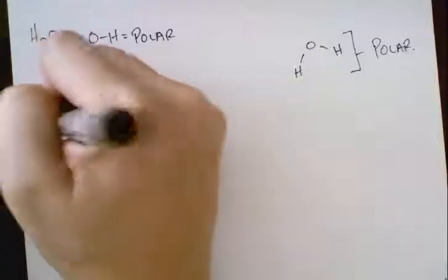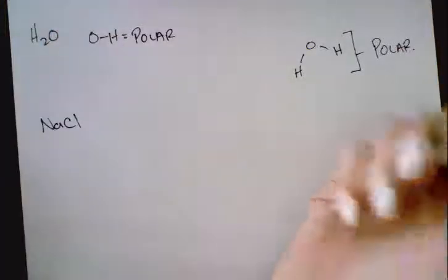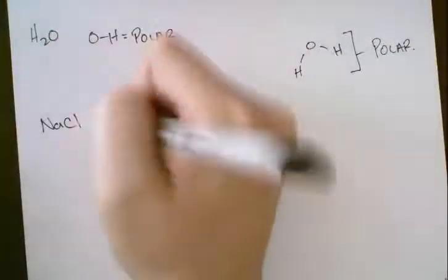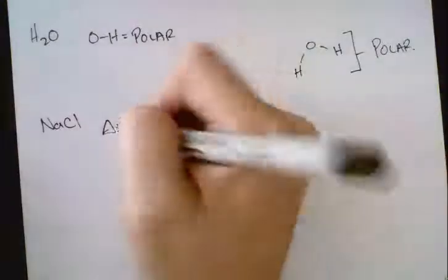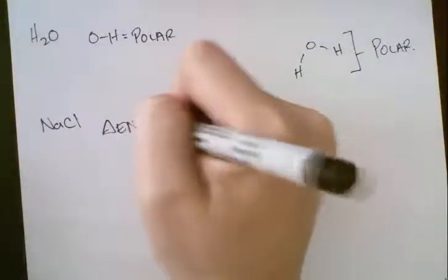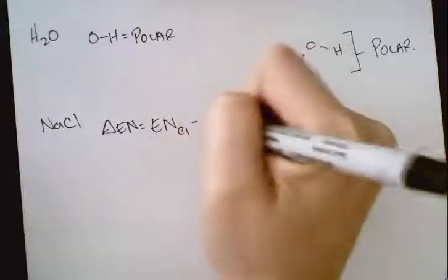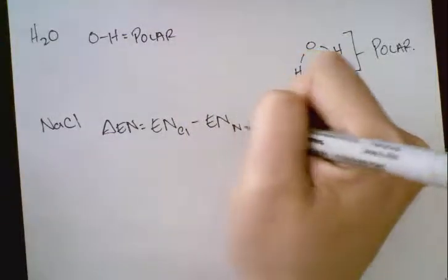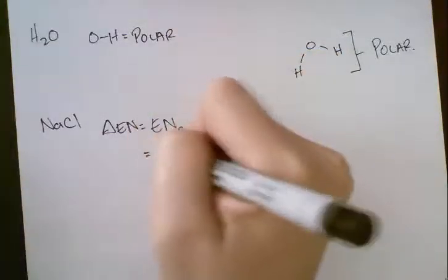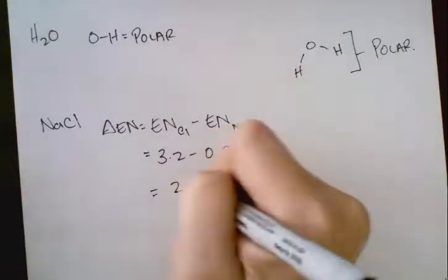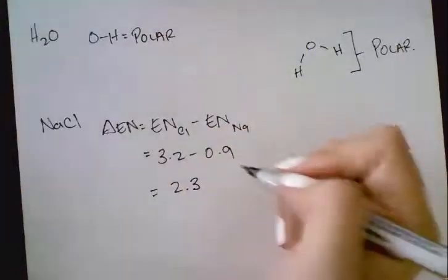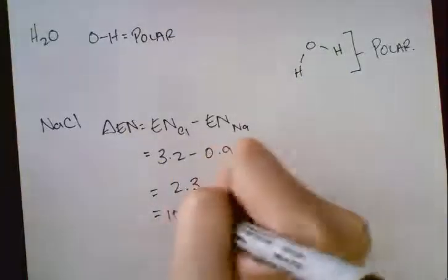Last one we have to take a look at is sodium chloride. This is new. We do have to calculate the delta EN for this. So our delta EN in this case is going to be the electronegativity of chlorine minus the electronegativity of sodium, which is going to be 3.2 minus 0.9, so that's going to be 2.3. This is greater than 2, so this is going to be ionic.